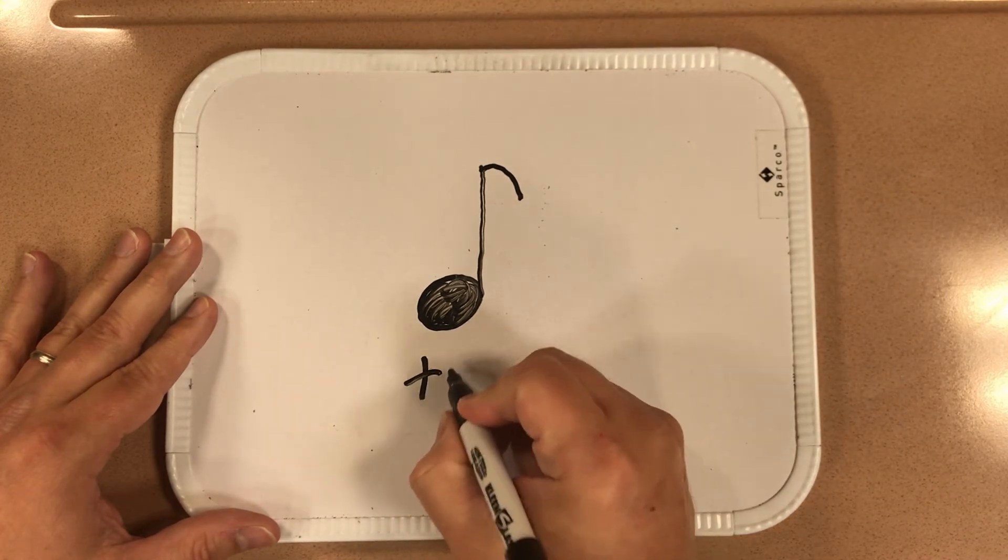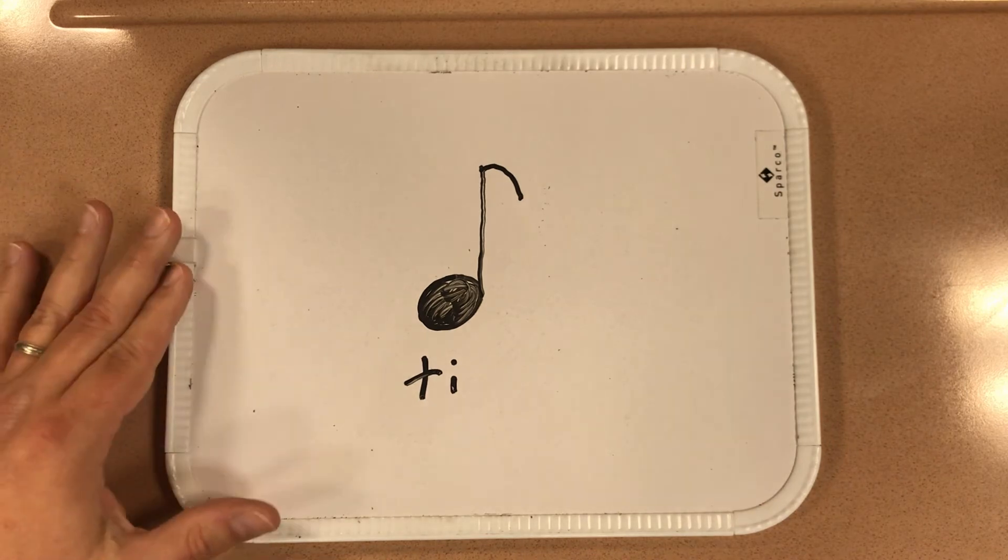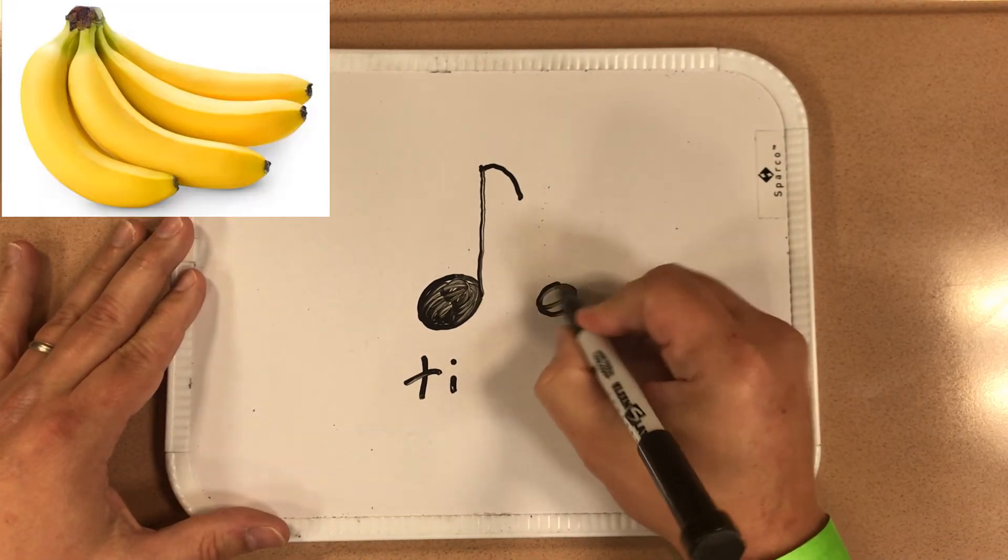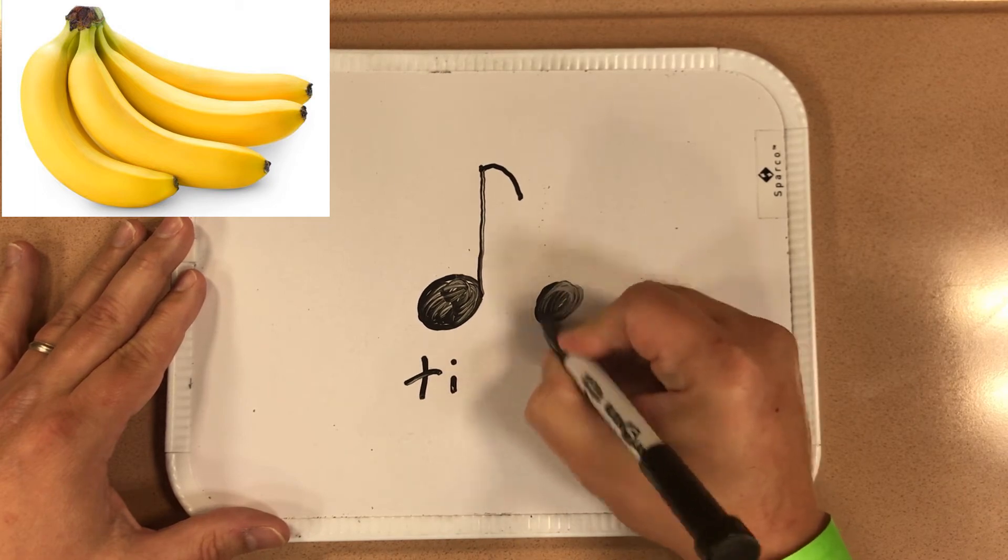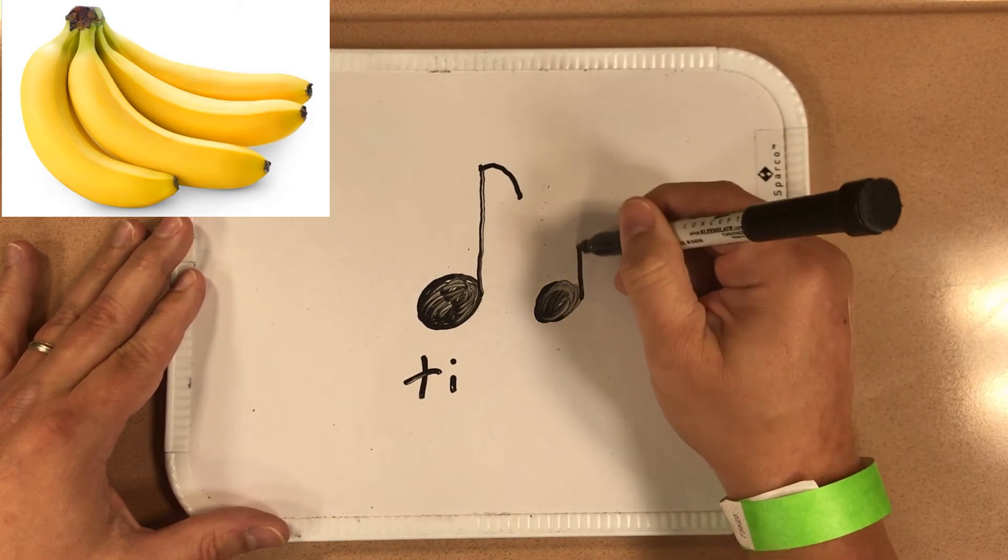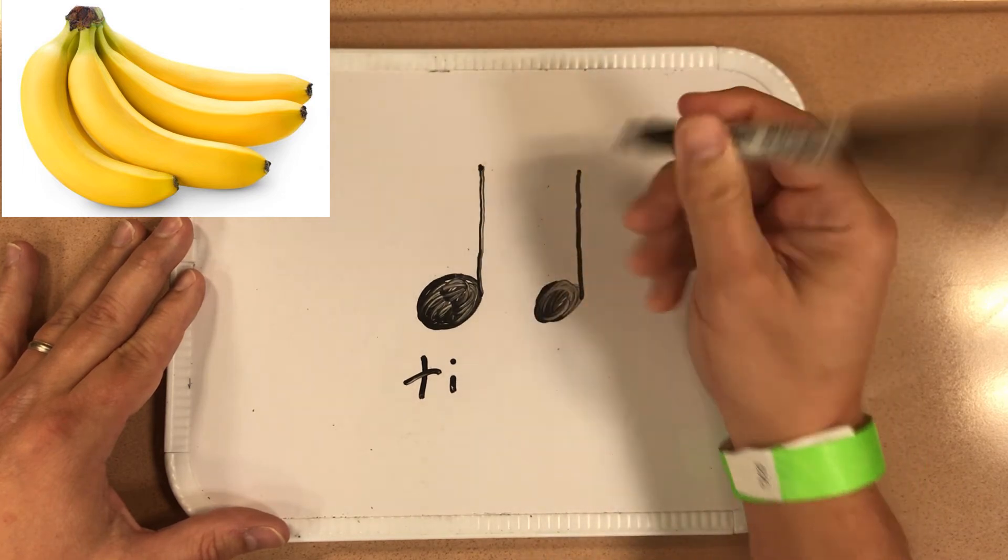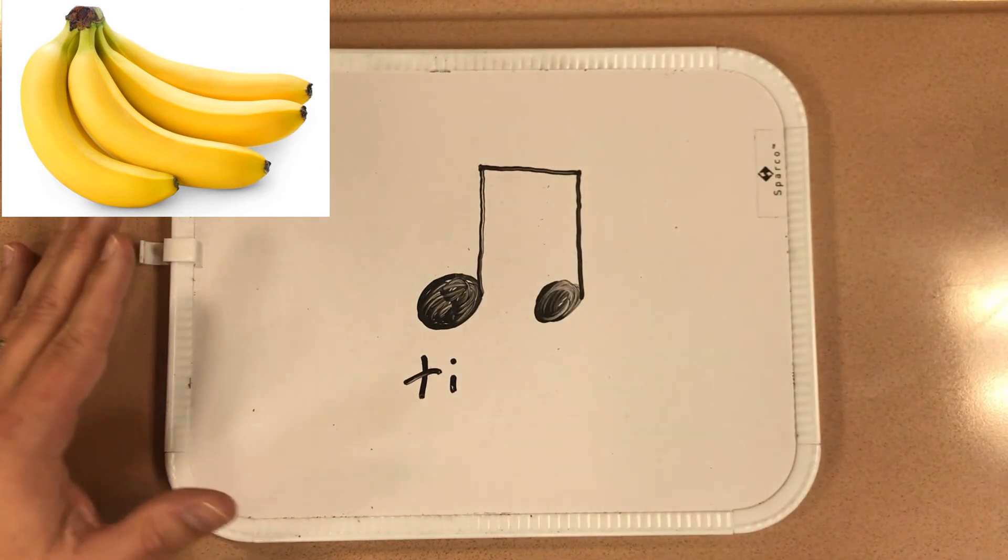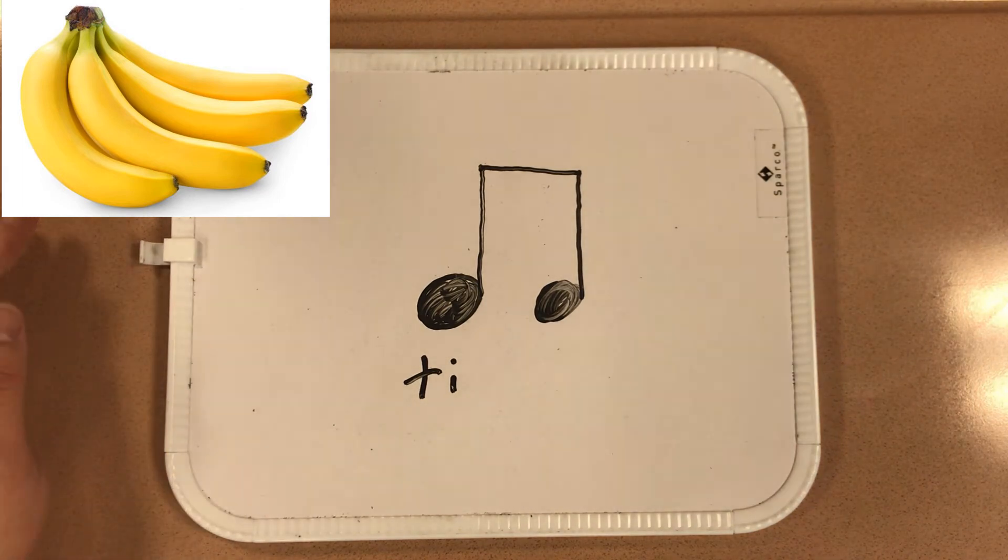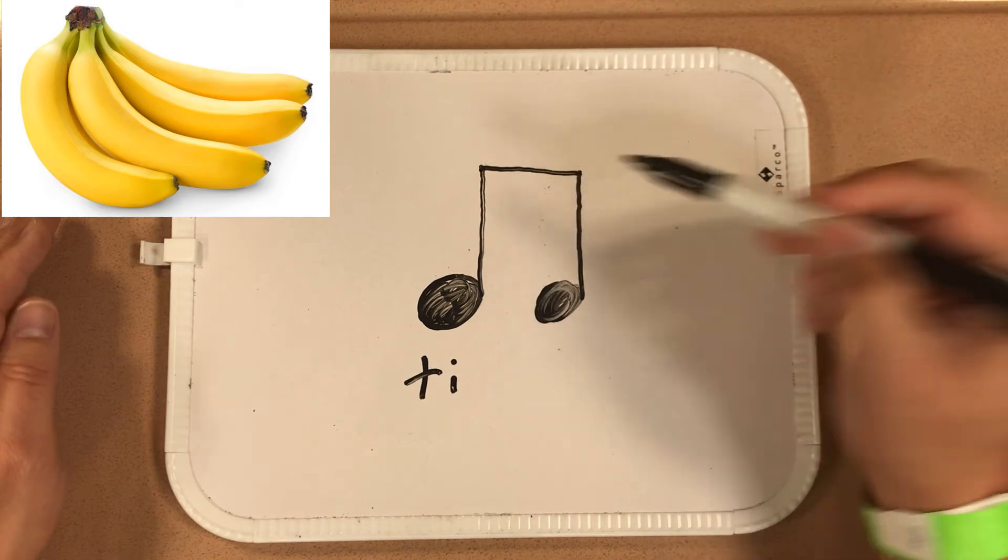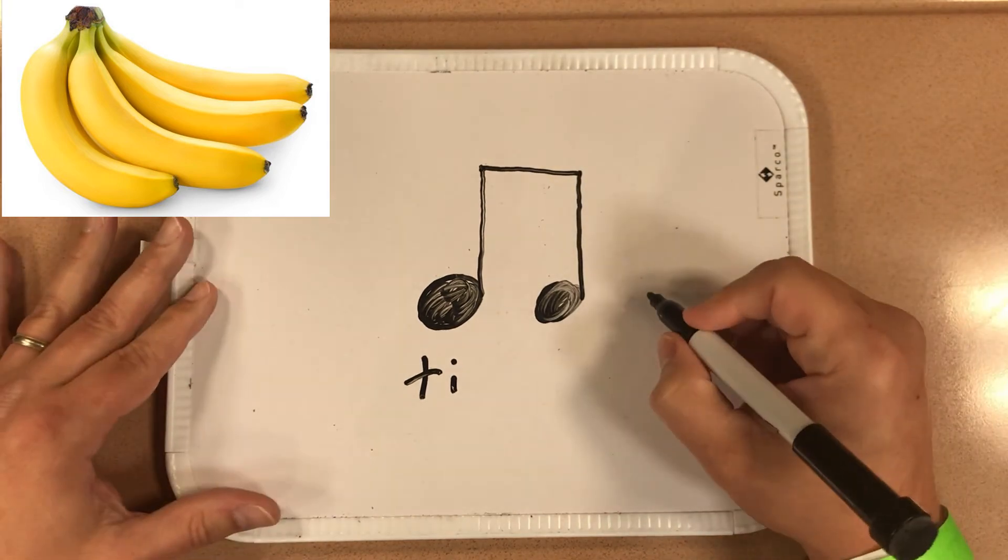Now tees are kind of like bananas - they like to travel in bunches. And when tees are together in bunches, they always like to stay together, so they have a bar across the top where their little flags will join. And you can have